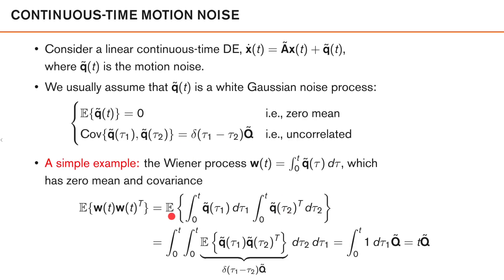An expectation is also a type of integral, so we can switch the orders of the integral — moving the integrals outside and the expectation inside. We then get the expectation of q̃(τ₁) times q̃(τ₂) transpose, which by definition is the cross covariance. This is the impulse function times Q̃. Since impulse functions are easy to integrate, integrating over τ₂ gives one, and integrating from zero to t simply gives t times Q̃. So the covariance of a Wiener process grows linearly with time, which is perhaps unsurprising as we keep adding more independent Gaussian random variables.